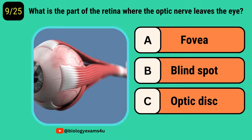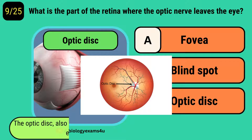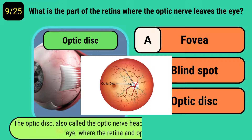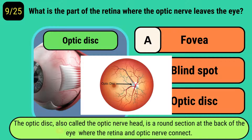What is the part of the retina where the optic nerve leaves the eye? The answer is optic disc, also called the optic nerve head. It is a round section at the back of the eye where the retina and optic nerve meet.